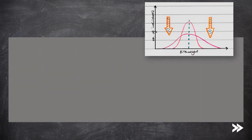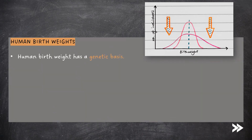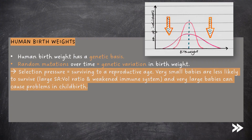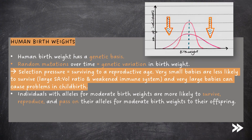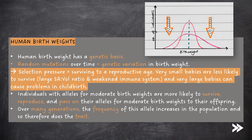Let's have a look at human birth weights. Human birth weight has a genetic basis. Random mutations over time mean that there is genetic variation in birth weight. The selection pressure in this case is surviving to a reproductive age. Very small babies are less likely to survive because they have a large surface area to volume ratio, so are more likely to experience problems with heat loss for example, and have a weakened immune system. Very large babies, on the other hand, can cause problems in childbirth. Therefore, individuals with alleles for moderate birth weights are most likely to survive, reproduce, and pass on their alleles for moderate birth weights to their offspring. The frequency of the allele for moderate birth weights increases in the population, and so therefore does this trait.